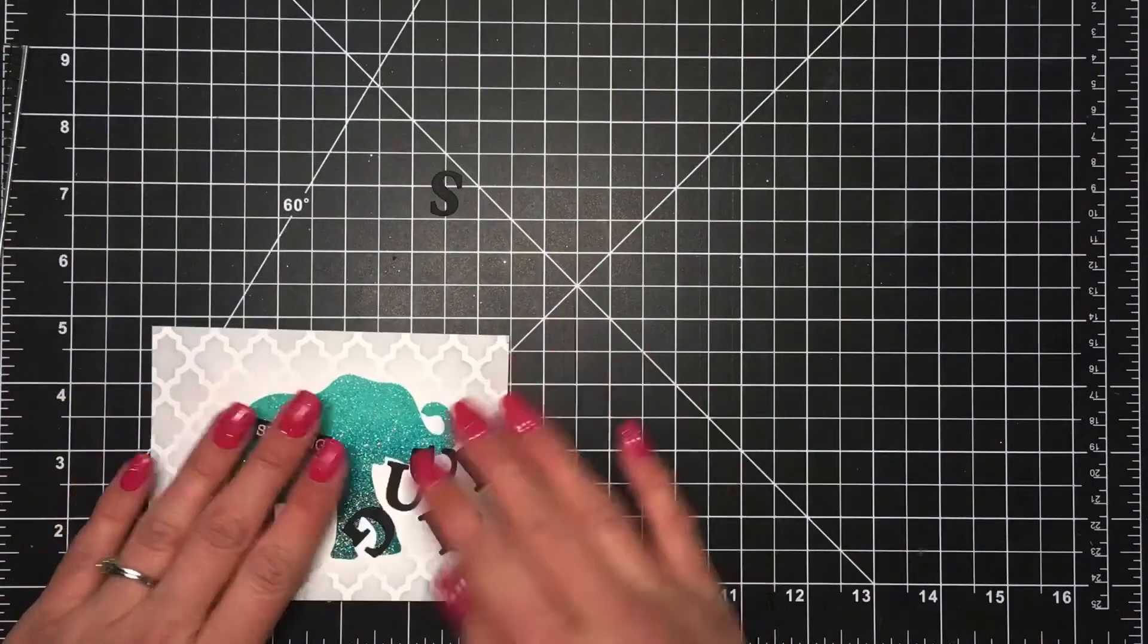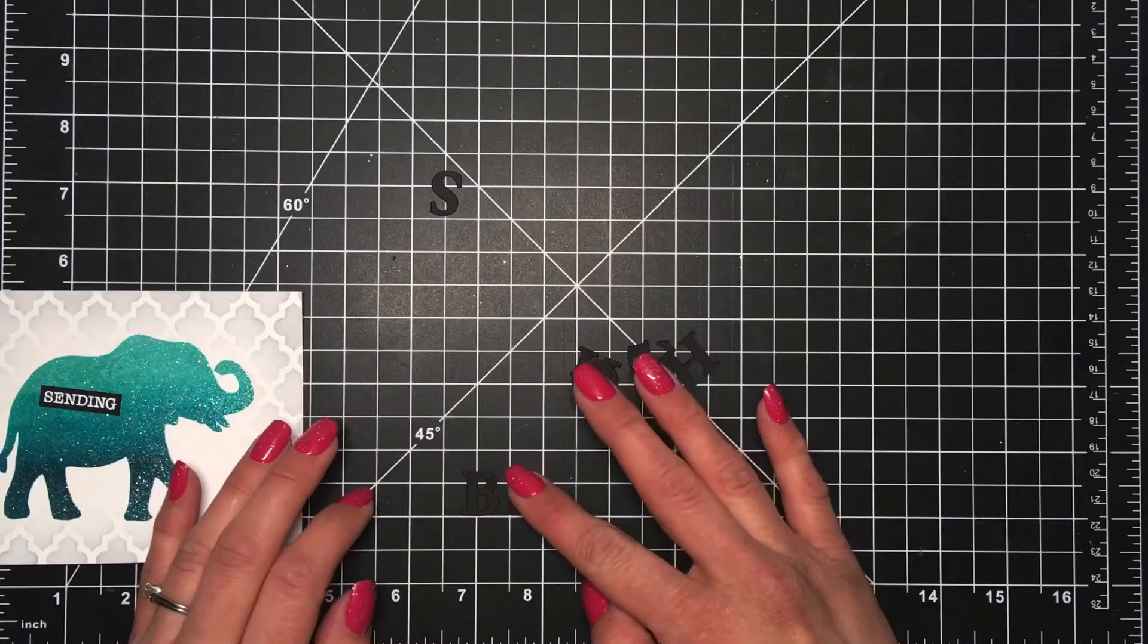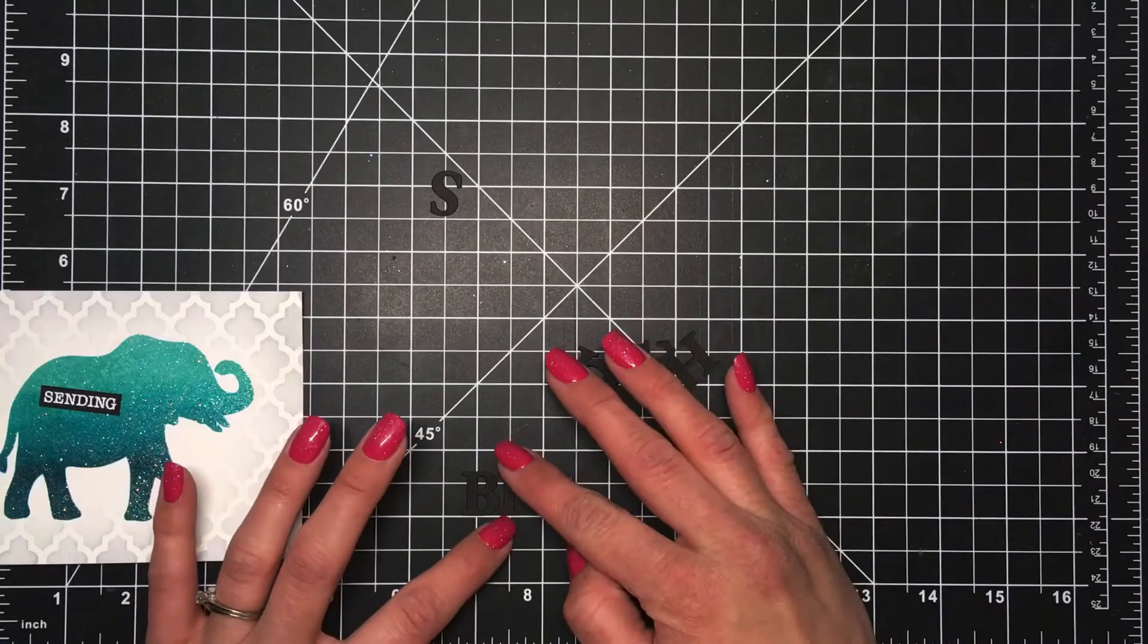Then I will take all of those letters that I die cut and I will line them up on my grid mat trying to get them as straight as possible.